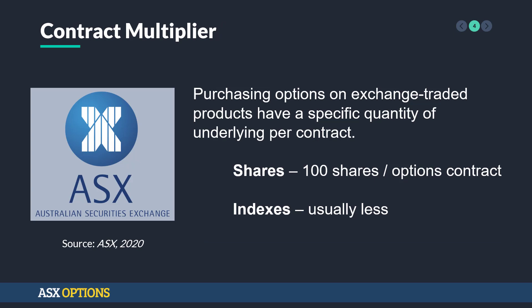Moving on to the contract multiplier — what is this? Essentially, purchasing options on exchange-traded products have a specific quantity of underlying per contract. If you go into the ASX and look up an options contract, there'll be a number of shares associated with that contract. For shares it's usually around 100, and for indexes it's usually less.